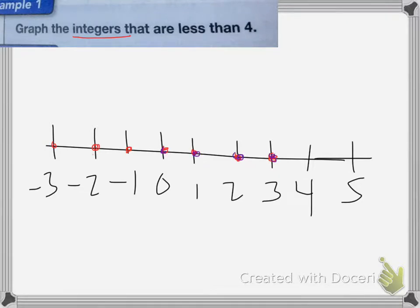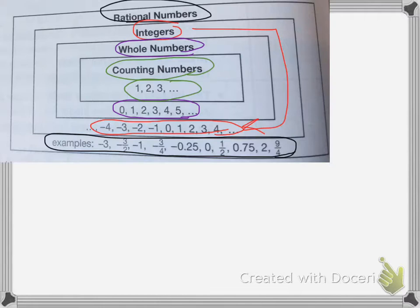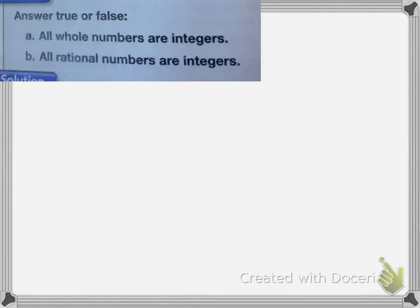Answer true or false: all whole numbers are integers. If we look at whole numbers, they are inside the integers box. So that means yes, all whole numbers are integers, because whole numbers are included.